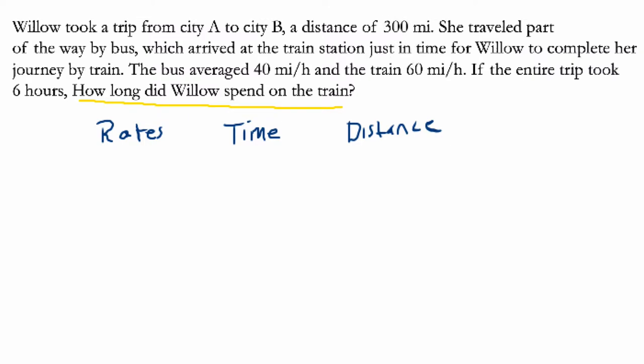That's our distance in this problem. Let's keep going. She traveled part of the way by bus, which arrived at the train station just in time for Willow to complete her journey by train. So we've got a bus and a train. All right, this is getting exciting. So we've got a train and we've got a bus.